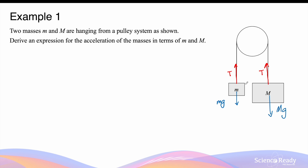In this example, we are going to assume that the pulley and the rope are massless, and that there is no friction between the pulley and the rope. To derive an expression for the acceleration of the masses, we can treat the two masses as a single mass.